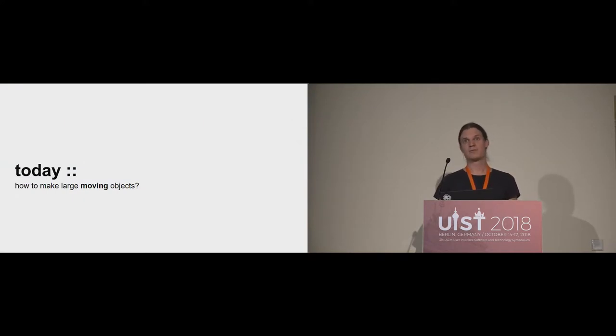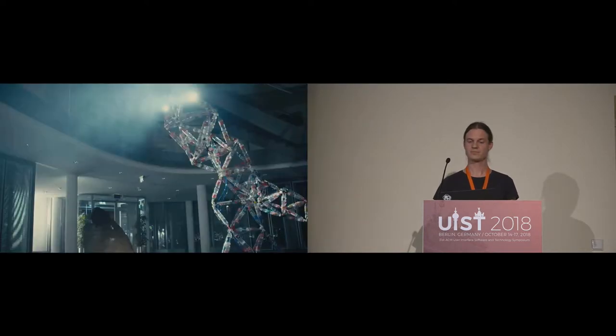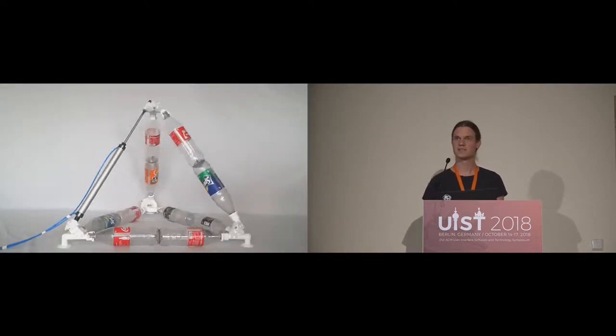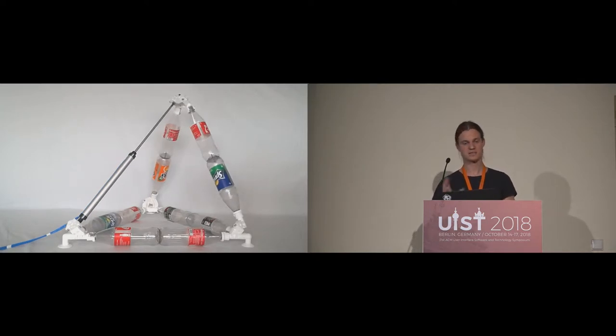But today, what I want to talk about is how to make large moving objects, like the dinosaur that you have seen a minute ago in the video. Let me show you the basic single cell of this dinosaur. This is the simplest kinematic primitive. It's a tetrahedra where one edge is exchanged with a linear actuator. And then it moves. In this way, we can create deforming objects, deforming trusses, and this concept is called variable geometry trusses.